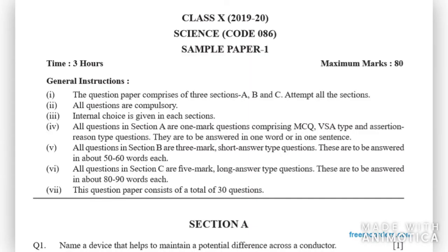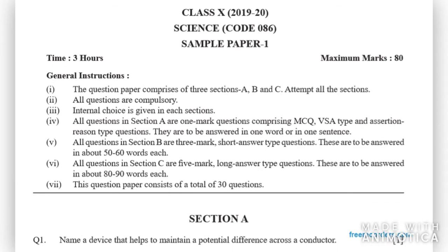Hello all, today I would be discussing the science sample paper with you and changes in the next 2020 board. This is the CBSE science sample paper. The first change is that the question paper comprises three sections: A, B, and C. Section A has MCQ-based very short answer type questions and assertion-reason type questions to be answered in one word or one sentence. Section B has three-mark questions with 50-60 words. Section C has 5-mark questions with 80-90 words each. In total, the paper has 30 questions to answer in three hours for maximum marks of 80.